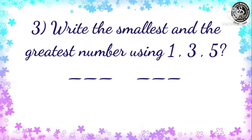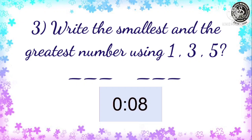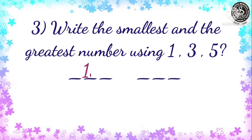Now, let us see question number 3. Write the smallest and greatest number using 1, 3, and 5. Your time starts now. Yes, time over. Let us see the answers. The smallest number we can make is 135 and the greatest number will be 531.